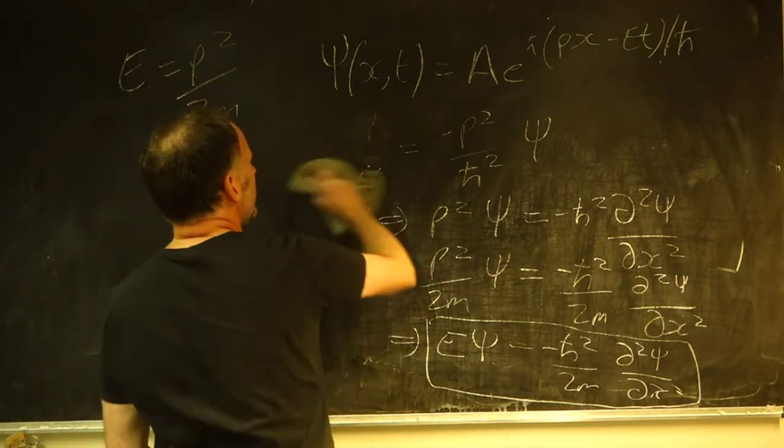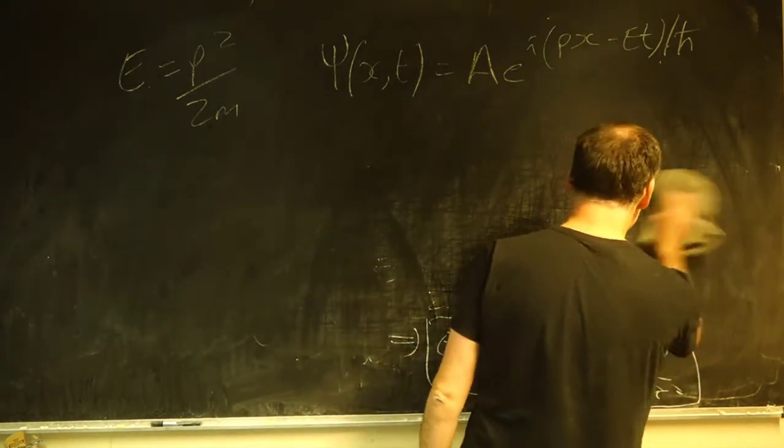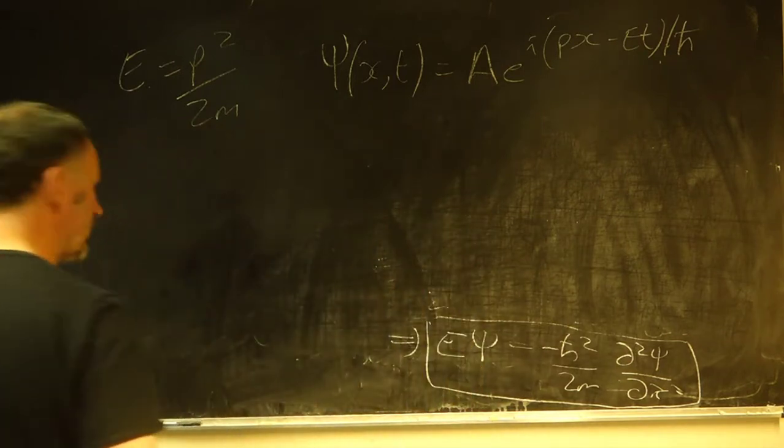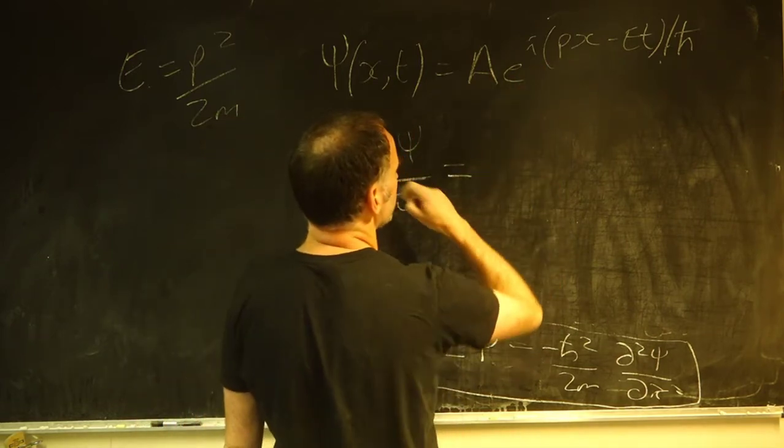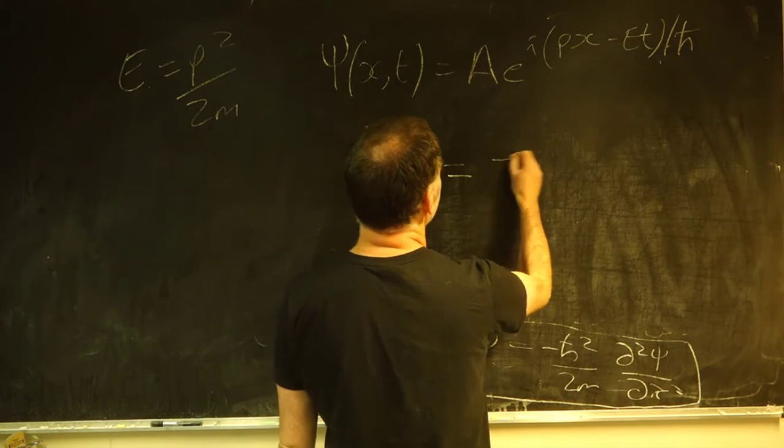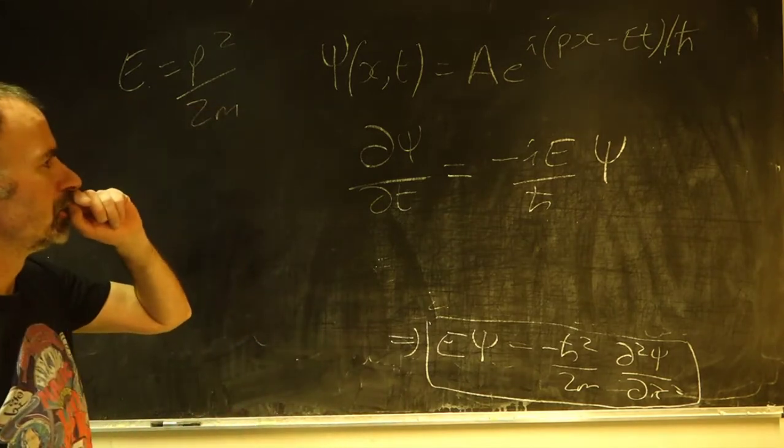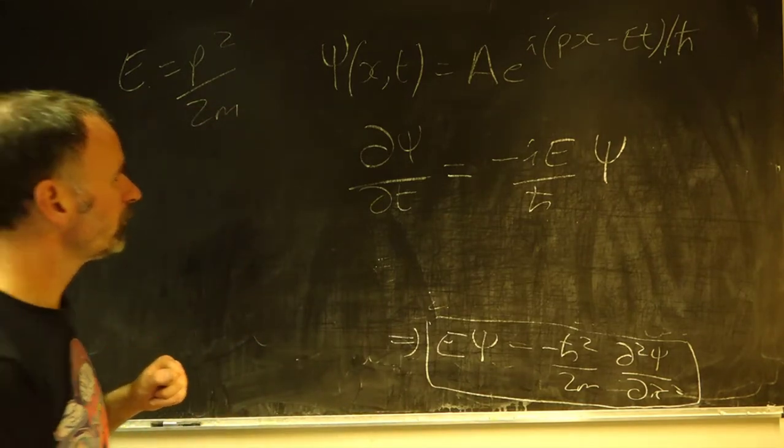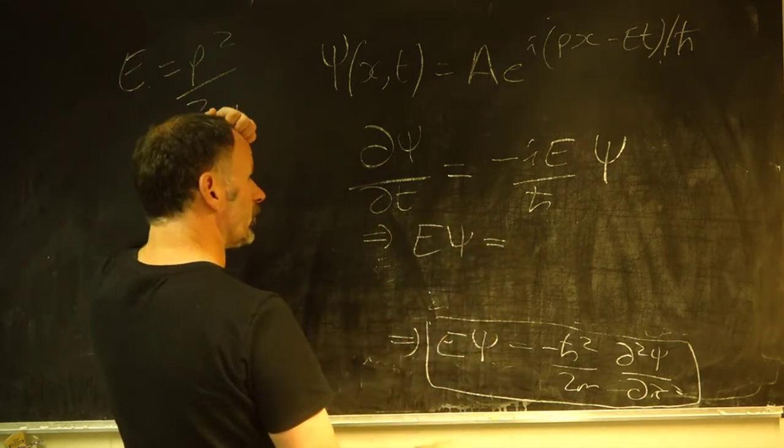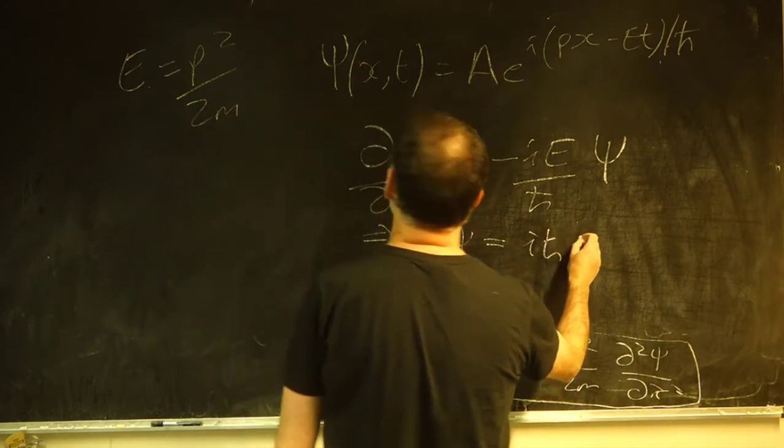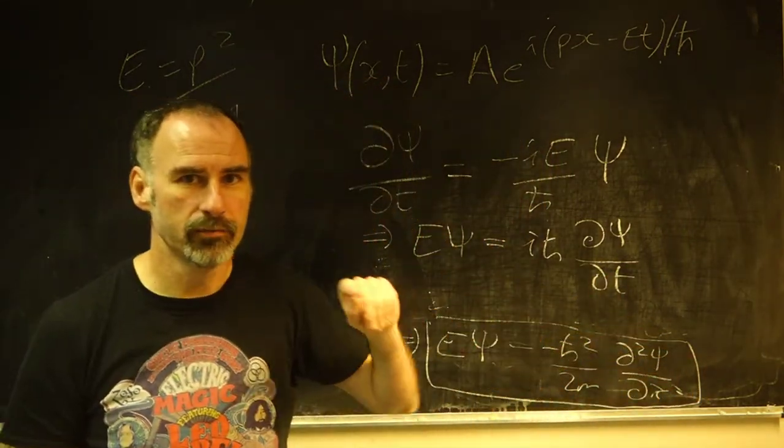Let's get rid of the rest of this and let's do the same thing in terms of time, except for time to pull out the energy. We're going to take the first derivative. So dψ/dt is equal to, let's differentiate this. This is going to be minus iE/ℏ ψ. So we have, let's rearrange that a little bit. That implies Eψ is equal to iℏ dψ/dt. Remember 1 over i is minus i.